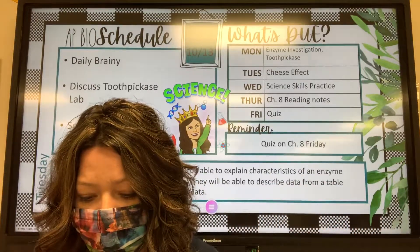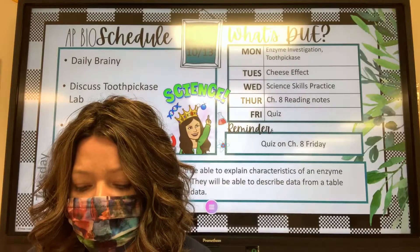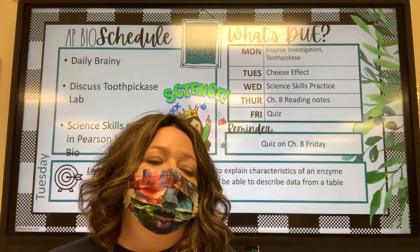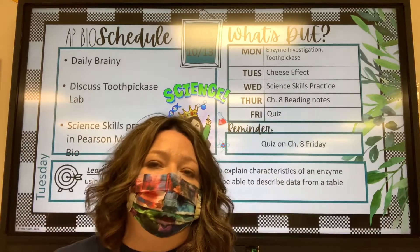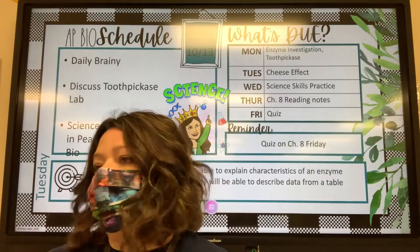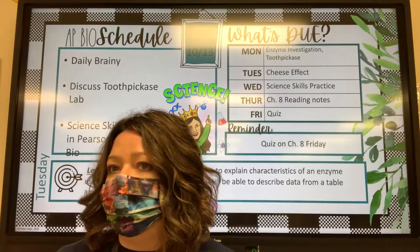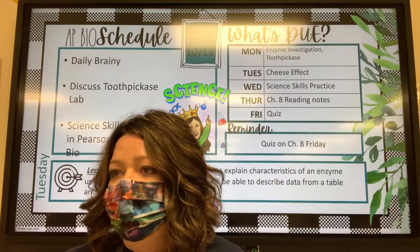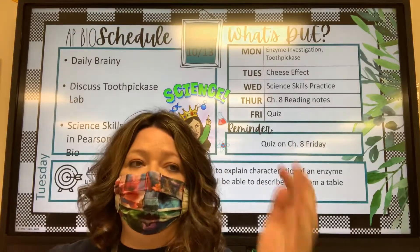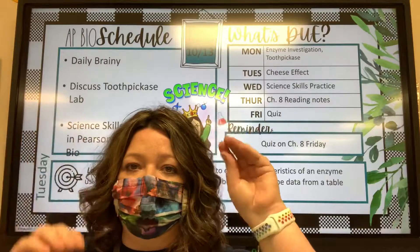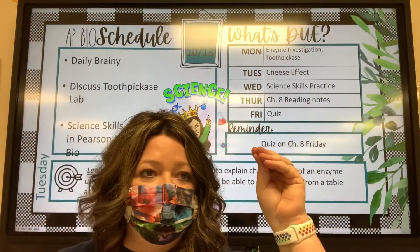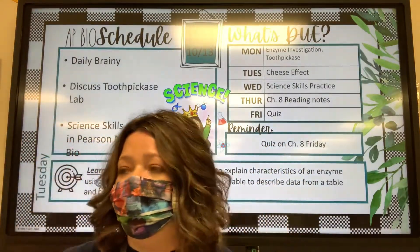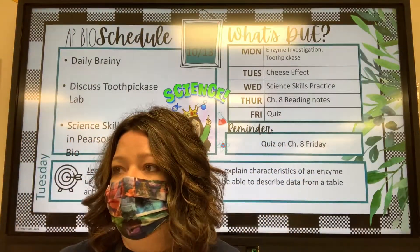What happened to the reaction rate when we doubled the amount of enzyme? And how did we double that amount of enzyme? We used two hands. So the first trial we used one hand, the second one we used two hands. And what happened when we doubled it?